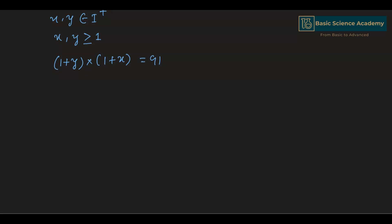Since both x and y are greater than or equal to 1 and we have added plus 1, (1 plus y) should be greater than or equal to 2 and also (1 plus x) should be greater than or equal to 2. The factors of 91 are 1, 91, 7 and 13.